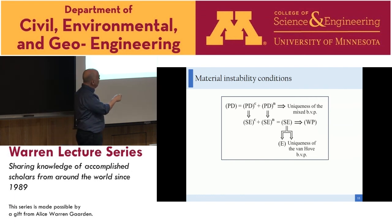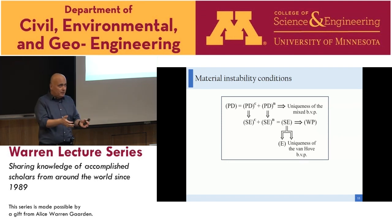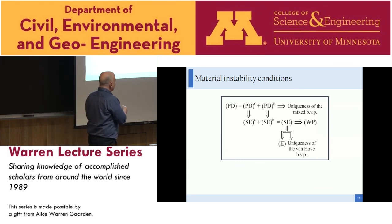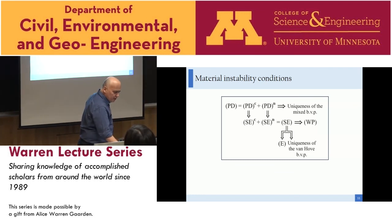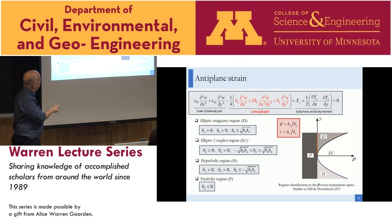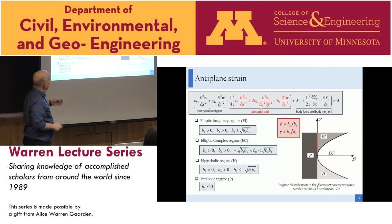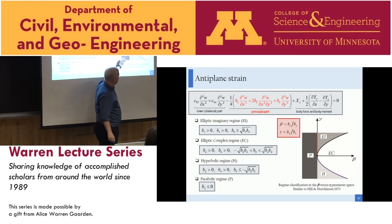To analyze antiplane strain, the differential operator reduces to a classical part and a principal part. We can classify regimes: elliptic imaginary, elliptic complex, hyperbolic, and parabolic. These can be sketched in a graph, similar to Hill-Hutchinson 1975, as a function of material parameters gamma and beta — which are combinations of B1, B2, B4.